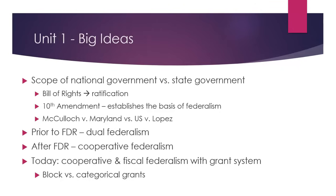Some very fundamental cases here: McCulloch v. Maryland, very important early on in establishing the strength of the national government over the states. But at the same time, U.S. v. Lopez gives some power back to the states, saying the national government is going a little too far with the Commerce Clause. Prior to FDR and the 1930s, we had what was called dual federalism — the national government did its thing, the state government did its thing, not much overlap. After FDR and the Great Depression, we have cooperative federalism, where they're working together. And that's really the definition of federalism we're in today with respect to fiscal federalism, where the federal government interacts with the states primarily through money — the grant system — with block versus categorical grants.